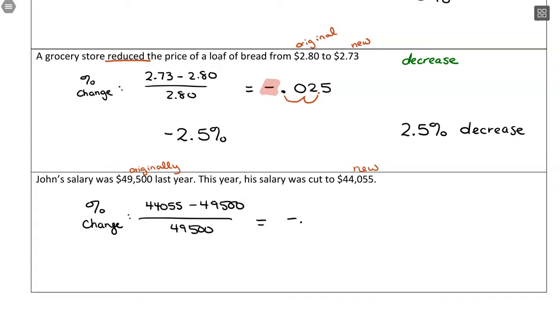Move our decimal over, which will be a negative 11%, which means John's salary had an 11% decrease. That's too bad, John. So that's percent increase, decrease, comes down to taking a difference and dividing.